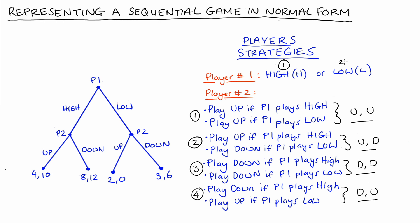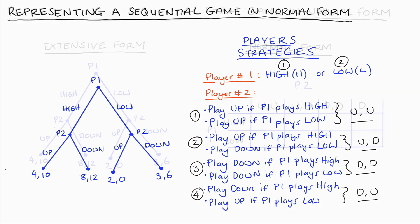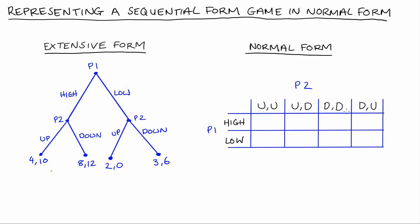Now that we have our strategies, we can put this game into normal form. I've made a table with two rows corresponding to Player 1's two possible strategies — high and low — and four columns corresponding to Player 2's possible strategies: UU, UD, DD, and DU. The last thing to do is think about the payoffs. I will outline on the game tree what's going on in orange as a visual aid.